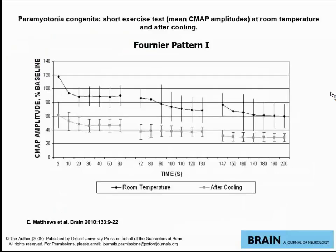Patients with paramyotonia congenita exhibit Fournier pattern one. With the first set of short exercises, there's an initial increment followed by a decrement, and they don't recover back to baseline. With successive trials, there's more and more decrement — the opposite of a warming-up effect, consistent with paradoxical myotonia. Cooling makes the decrement even greater. This is very helpful in distinguishing between paramyotonia congenita and myotonia congenita.